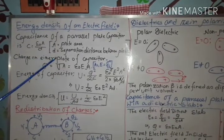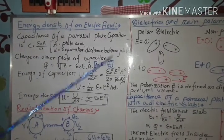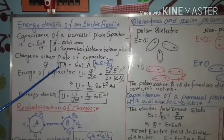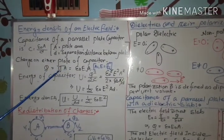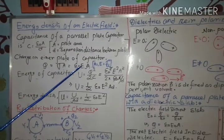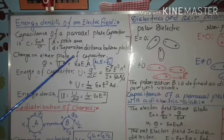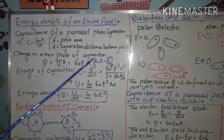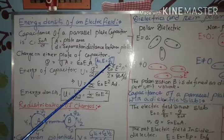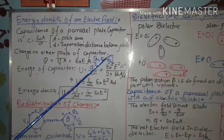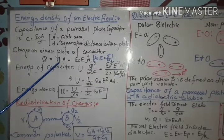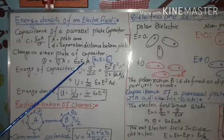Now, the charge on either plate of the capacitor: Q equals charge density into area, that is sigma into A. And since E equals sigma by epsilon naught, we get sigma equals epsilon naught into E. Therefore, Q equals epsilon naught E A.